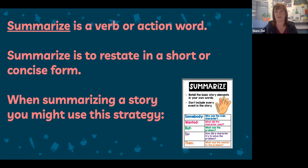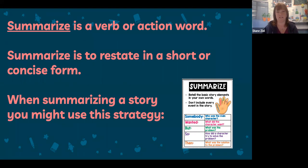Just include the important events to get the gist: naming the characters, what the character wanted, what problem they encountered, how they solved it, and what was the resolution. When you're able to identify these parts of the story, you are summarizing.